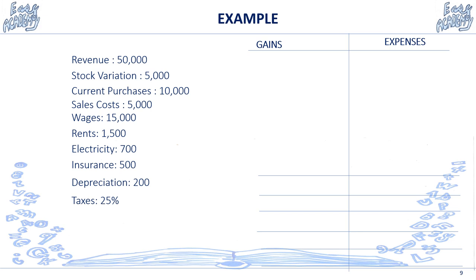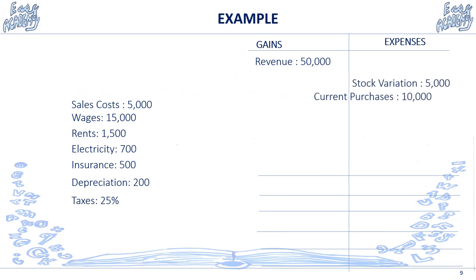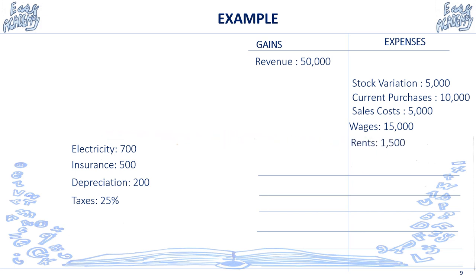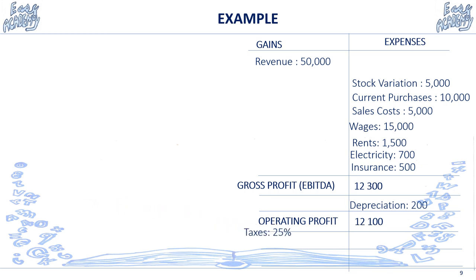Let's take an example. A company generates revenue of 50,000 euros — that's a gain. Stock variations, current purchases, sales-related costs, wages, rent, and electricity are all expenses. After deducting all expenses you get the gross profit. Then there is depreciation of 200, giving you the operating profit of 12,100. After applying taxes of 3,025, your net result is 9,075.